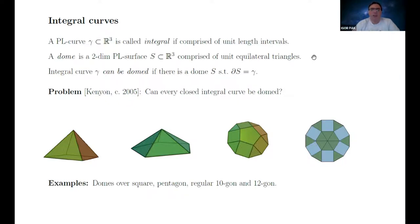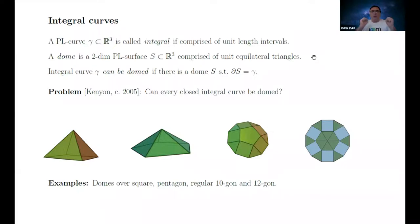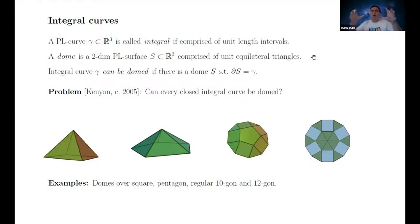Let me start with definitions. A PL curve is integral if it's comprised of unit-length intervals. A dome is a two-dimensional polyhedral surface comprised of equilateral triangles — that's what a dome is. And I'll say that an integral curve can be domed if there is a dome whose boundary is that integral curve.